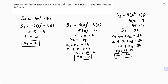So the AP is 2, 12, 22, and so on. Now they're also asking to find the 16th term. The first term is 2 and the common difference d is a2 minus a1, which is 12 minus 2, giving d equals 10.